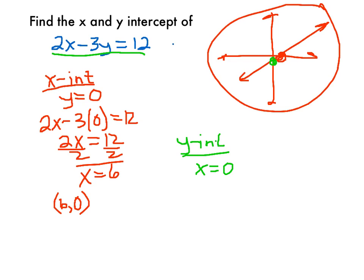So when you substitute 0 in for x into your equation, we get minus 3y equals 12, divide by negative 3, we get y equals negative 4.